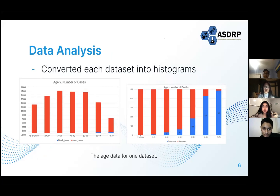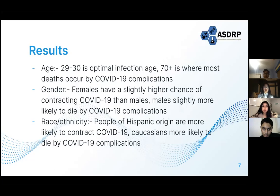Where there were age overlaps, we could predict that those ages would be the most likely for contraction of COVID-19 or death by complications of COVID-19. For our results, we found that ages 29 to 30 years old were the most likely to contract COVID-19, and individuals ages 79 to 81 years old were most likely to die from COVID-19.